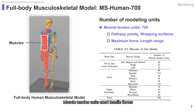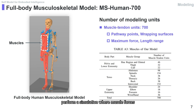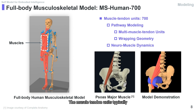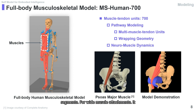Muscle tendon units exert tensile forces on bones to move joints. The maximum force and length range are defined to perform a simulation where muscle forces are calculated from neural excitations. The muscle tendon units typically originate and are inserted at pathway points attached to different body segments. For wide muscle attachments, each will be modeled as multiple independent muscle tendon units.